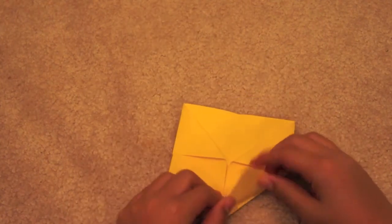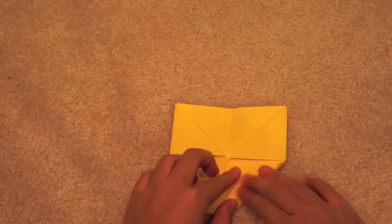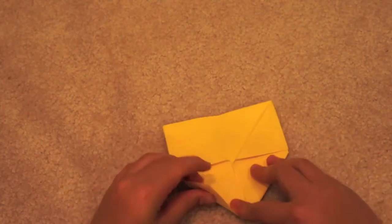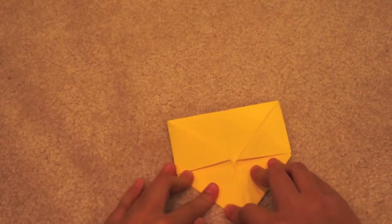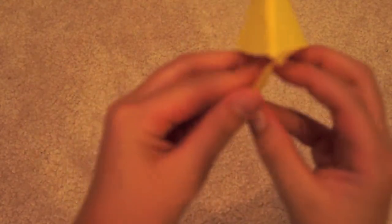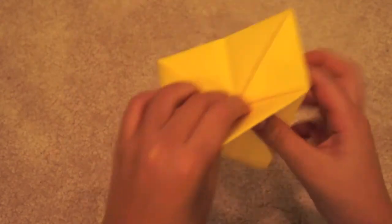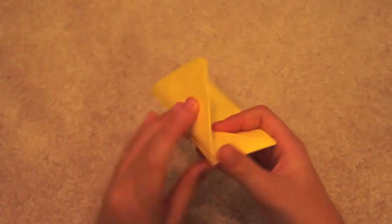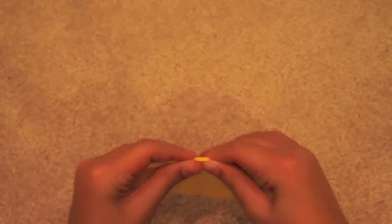You do that to both sides. Then after that, you need to fold the bottom tip up. You need to separate the two bottom flaps and then fold them up to the top. After you've done that, you need to crease it.